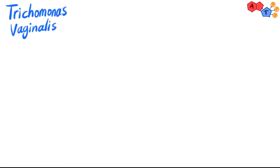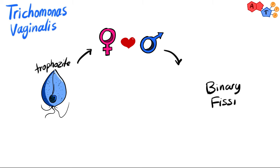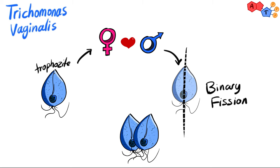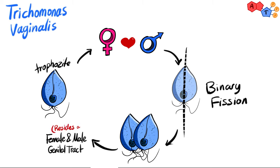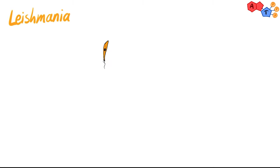Trichomonas vaginalis is transmitted via sexual contact and replicates its trophozoites without forming any cysts. It usually resides in the female genital tract and the male urethra and prostate.